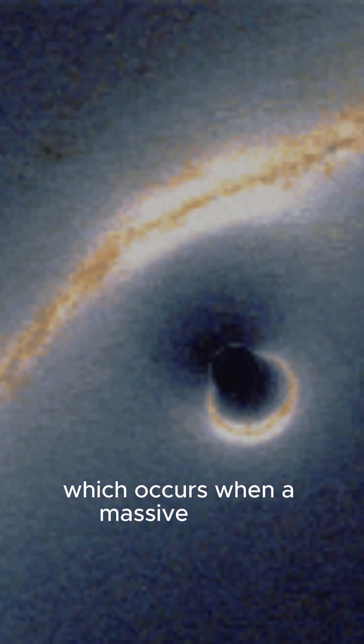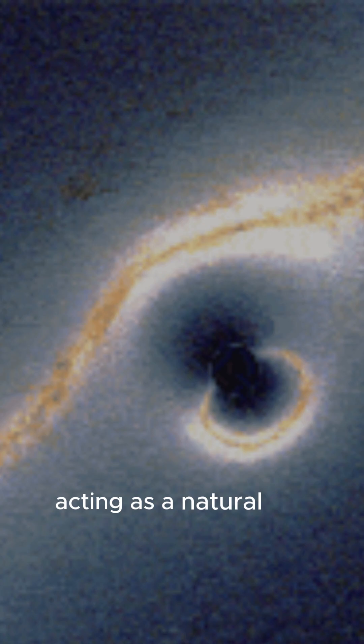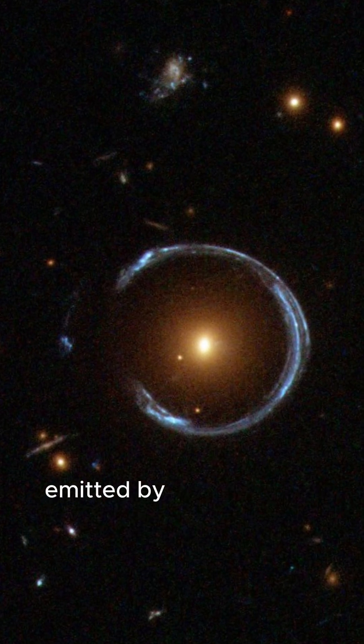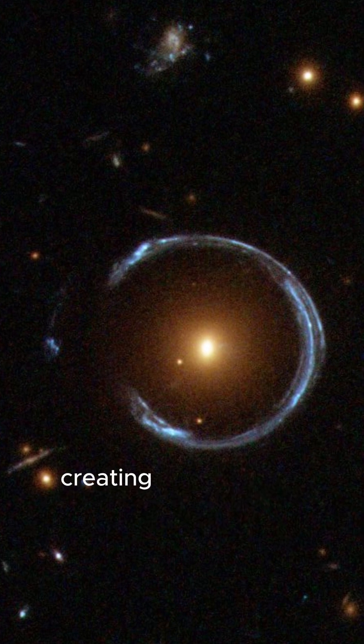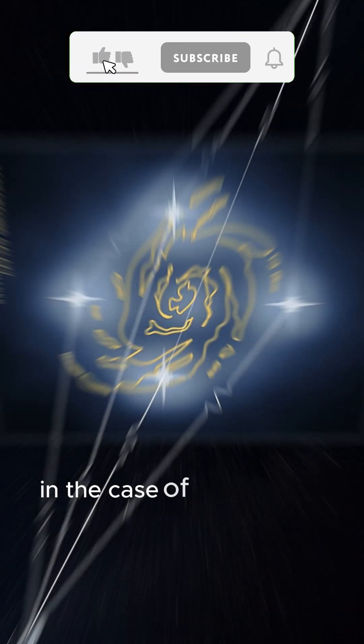which occurs when a massive object such as a black hole or galaxy bends the space-time around it, acting as a natural lens. This phenomenon distorts the light emitted by more distant objects, creating multiple and amplified images. In the case of the Einstein Cross,